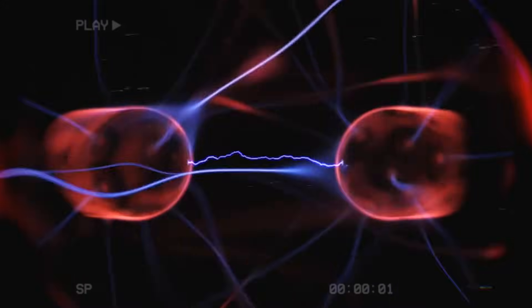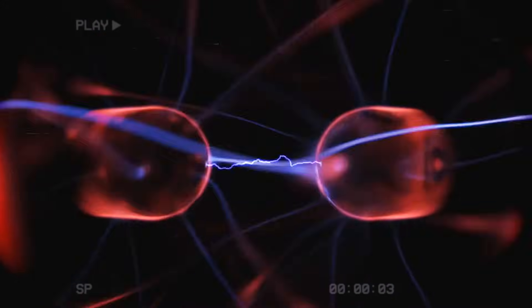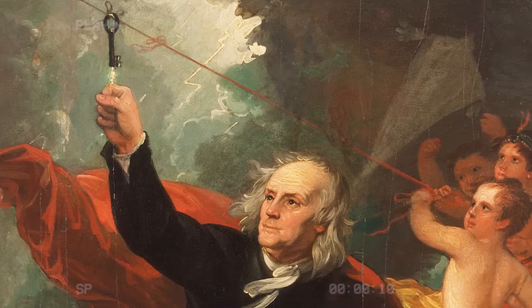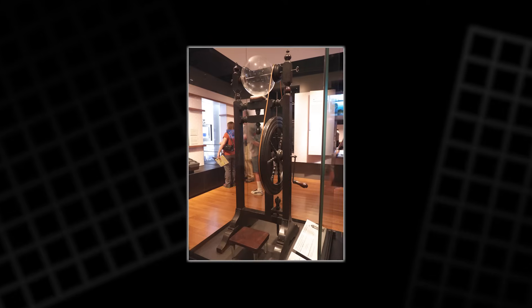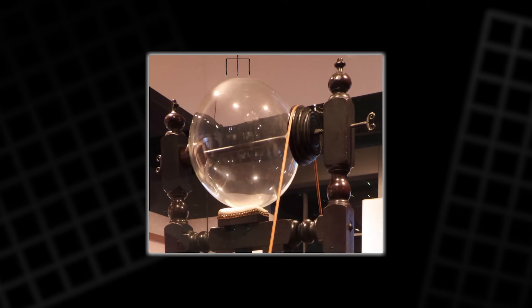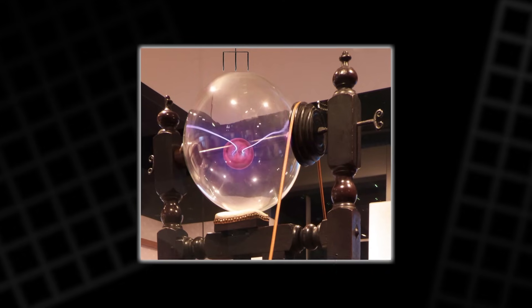That invisible pull is static electricity. It is simple, yet powerful enough to move objects without a single magnet. In the mid-18th century, Benjamin Franklin played with this strange effect. He built a small device called an electric wheel. It used metal pieces charged by a jar that stored static electricity.